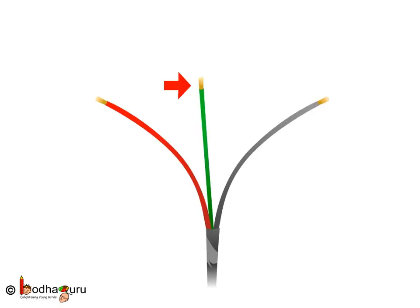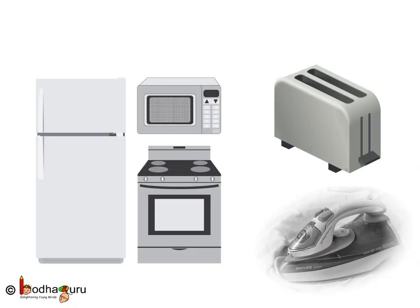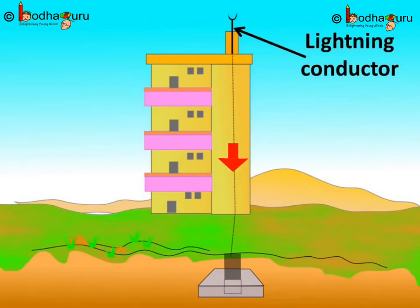An earth wire, generally having green insulation coating, is connected to a metal plate deep in the ground, and this is known as earthing. Many appliances have a metallic body, like the refrigerator, toaster, iron, etc. The metallic body is connected to the ground through this path, so in case of any current leakage to the metallic body, the charge goes to the ground and the user doesn't get a severe shock. So this earth wire is very important for safety purposes.